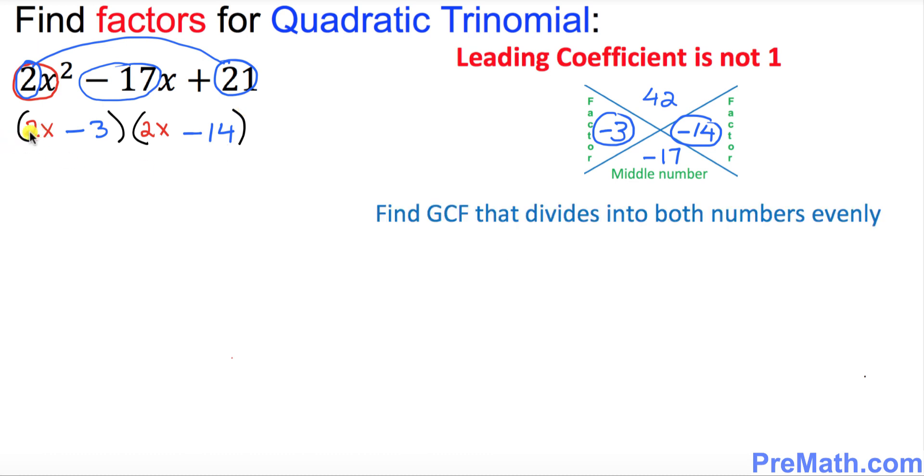So in the next step, I want you to just focus on the very first parentheses, the numbers inside this parentheses, 2 and 3. There's nothing in common, just leave them alone. Look at the second parentheses, we have 2 and 14. We must find the GCF of these two numbers, 2 and 14, the biggest number that divides into both of them at the same time, and obviously the number is 2.